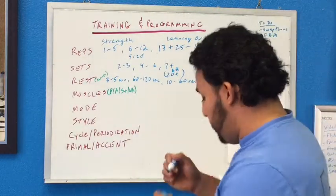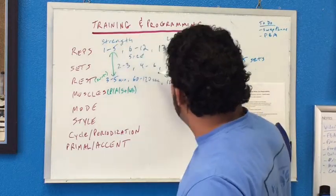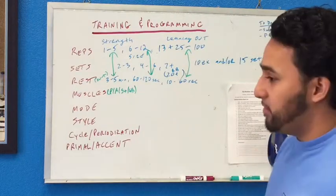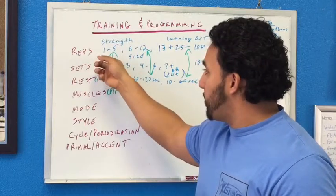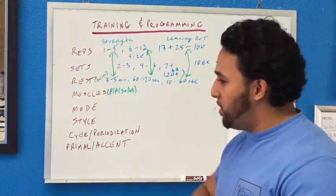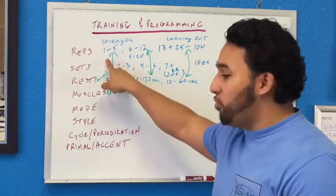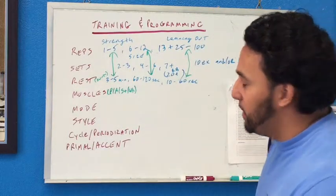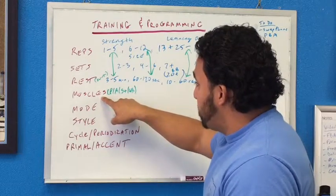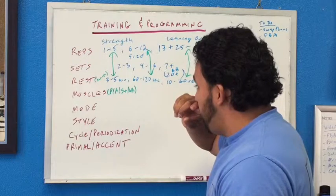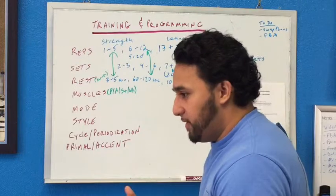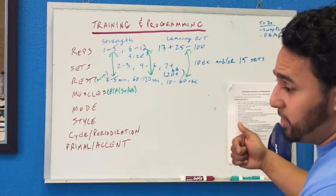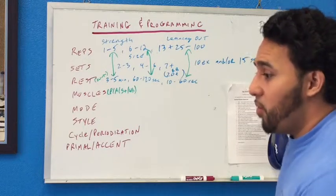Keep in mind these rep, set, and rest ranges coincide with each other. Each one hits the muscle fibers differently: strength doesn't change size but makes it stronger and a little thicker; 6-12 reps will change muscle size; and 13-plus will lean it out, burn it, shrink it slightly so it looks more defined. As far as muscles go, when working legs you have to consider quads, hamstrings, calves, abductors, adductors, ankle mobility, range of motion, and shins — different aspects you need to address.